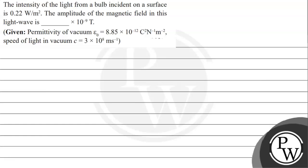Hello everyone, let's solve a given question. The question says: the intensity of light from a bulb incident on a surface is 0.22 watt per meter squared. The amplitude of the magnetic field in this light wave is dash into 10 raised to minus 9 tesla. Given: permittivity of vacuum ε₀ = 8.85 × 10⁻¹² coulomb squared per newton per meter squared, speed of light in vacuum c = 3 × 10⁸ meter per second.